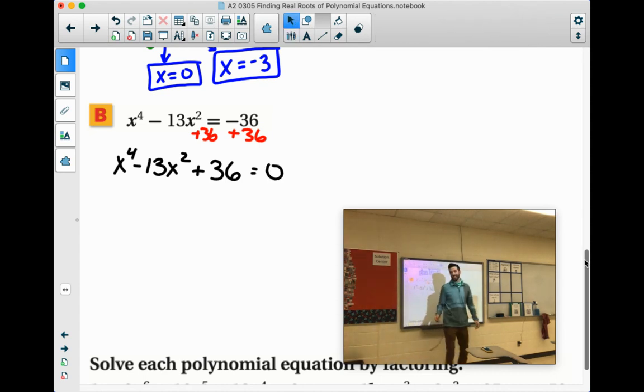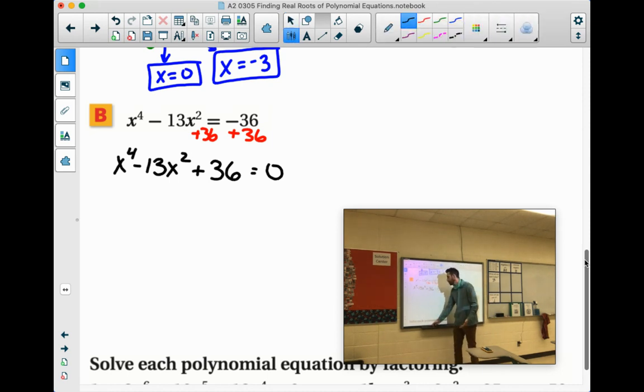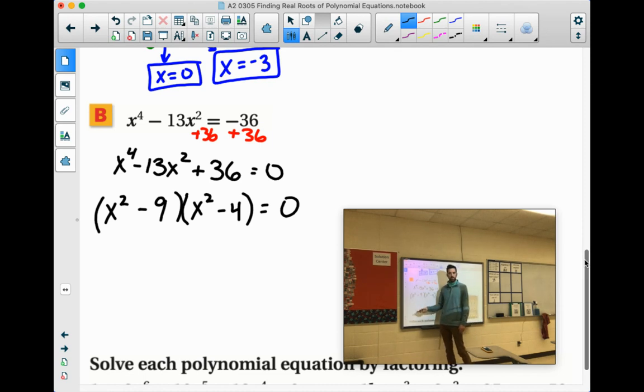So we will have x to the 4th minus 13x squared plus 36 equals 0. Now, ordinarily it is x squared and x. That's how we're used to factoring it. So this x to the 4th and x squared will just mean that when we're factoring it, it would normally be like x minus 9 and x minus 4, but this would be x squared minus 9 and x squared minus 4, right? Because x squared times x squared gives you that x to the 4th power.